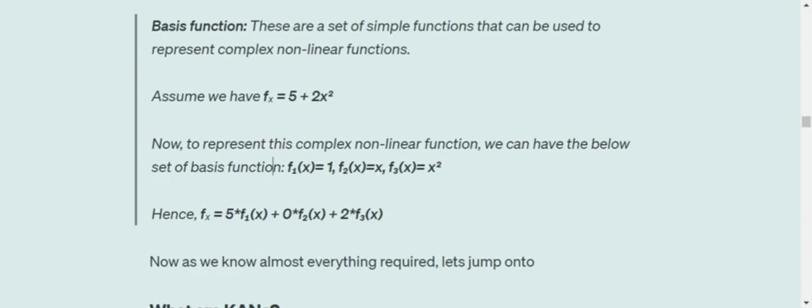Assume that we have got this particular function 5 plus 2x square. Now, the different basis functions that we can use are f of 1, f of 2, f of 3. Assume that these are the basis functions that we have got. Now, the representation of this particular function can be done using these smaller basis functions.